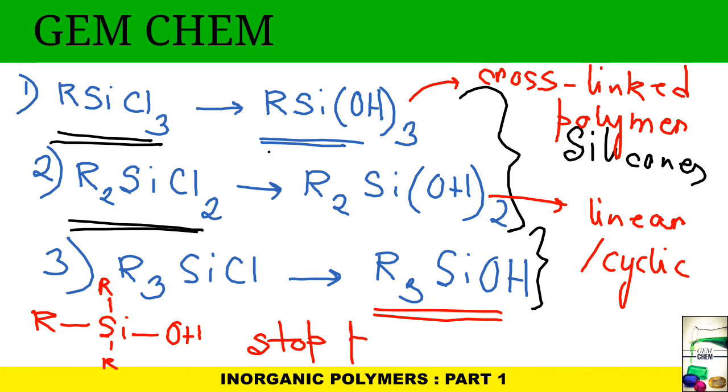This one, this particular thing, if we see very carefully, then we can understand that there is only one place to react. So it acts as a stopping agent of polymerization. It helps to stop polymerization. Remember it.